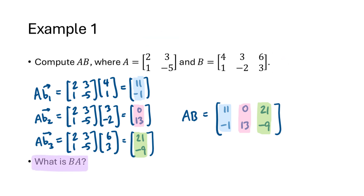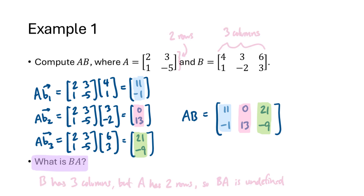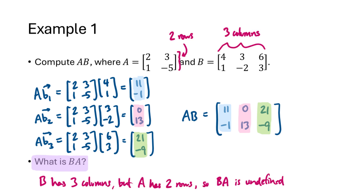Now let's think about B times A. B is the first matrix and has 3 columns, while A is the second matrix and has 2 rows. Since 3 and 2 don't match, the product B times A is undefined.